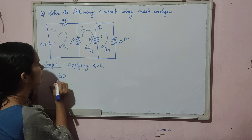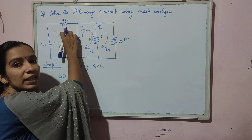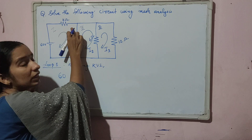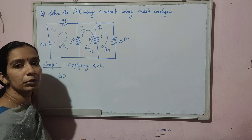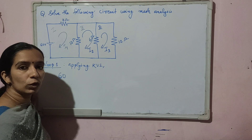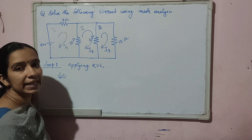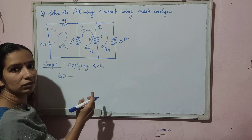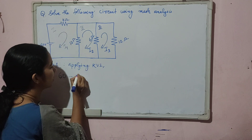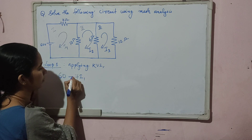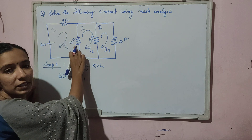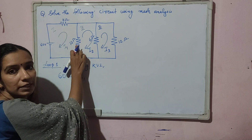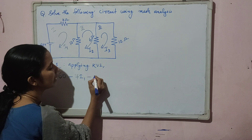The next component is the 7 ohm resistor. The direction of movement and the direction of I1 are the same, so there is a drop in potential — marked as negative: −7I1. The next component is the 12 ohm resistor; similarly, I1 is flowing in the same direction, so the voltage drop is also negative: −12I1.